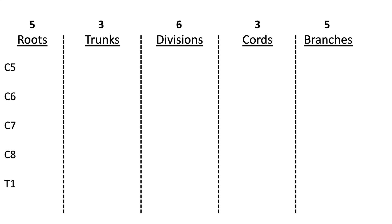The C5 and C6 roots will combine to form what's called the superior trunk. The C7 root will pass on as the middle trunk, and the C8 and T1 roots will combine to form the inferior trunk.